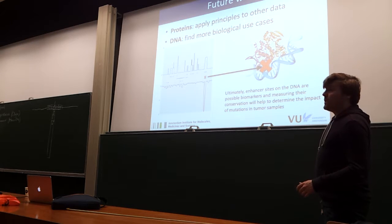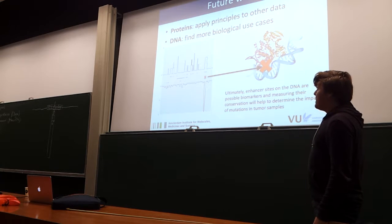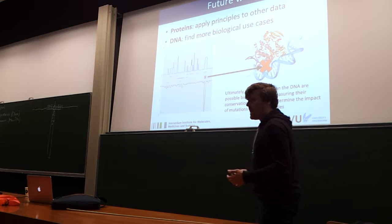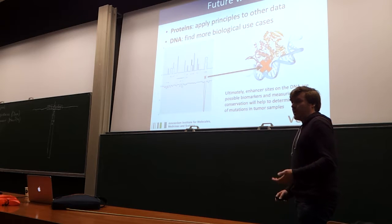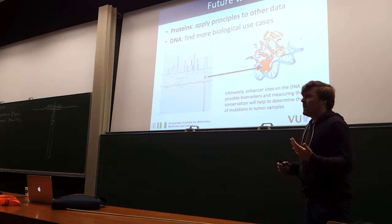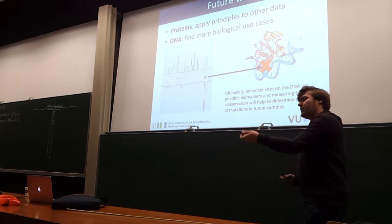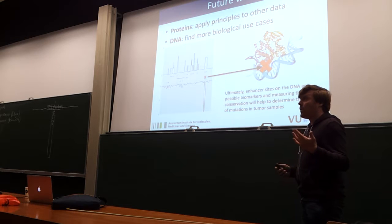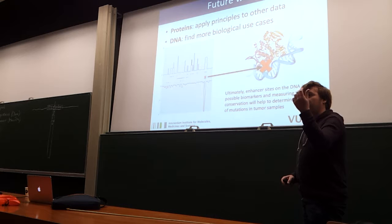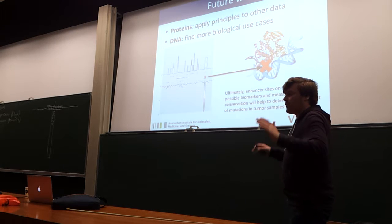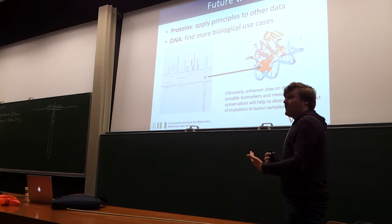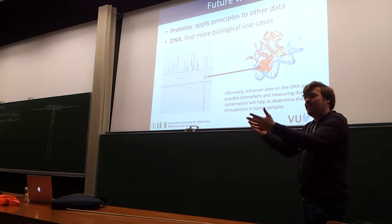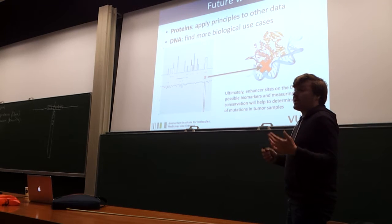Looking at where we're going next: in proteins, we want to see whether we can apply the principles developed for M-APLINE to other types of annotations. We're using motifs now, but we're thinking about maybe using whether an amino acid is on the surface or in the core of a protein, or whether an amino acid is predicted to have a certain type of secondary structure — basically any type of amino acid or nucleotide level annotation. We could say that amino acids annotated as being in a helix are more likely to be aligned on top of each other than those not in the same secondary structure type.